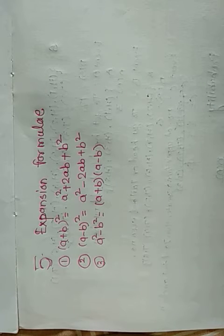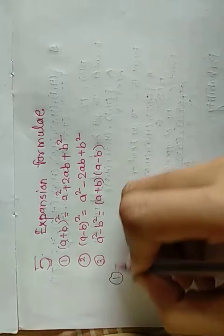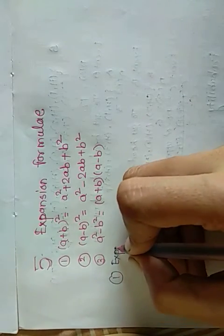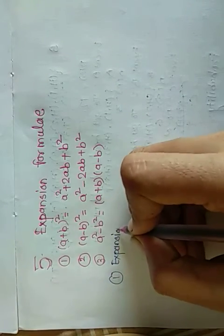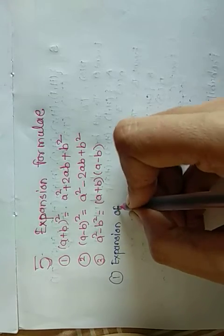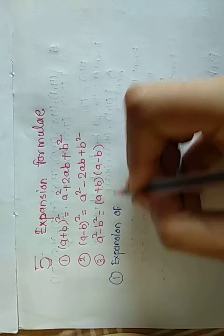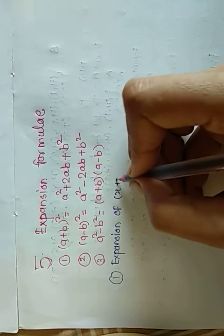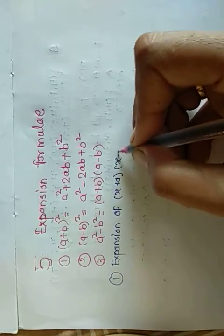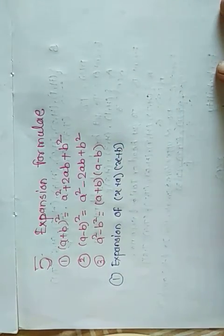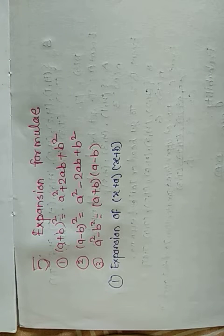Now today we are going to learn a new expansion formula. The first new expansion is (x+a)(x+b). The formula is: (x+a)(x+b) = x² + (a+b)x + ab.